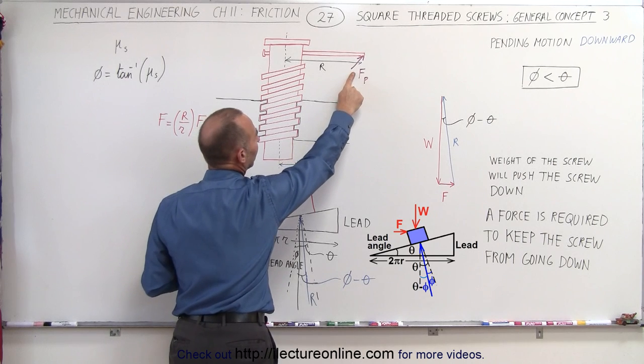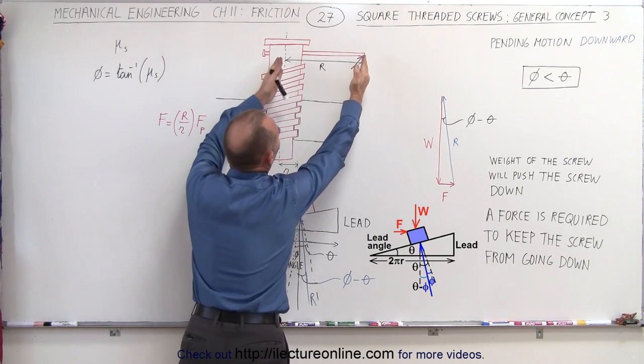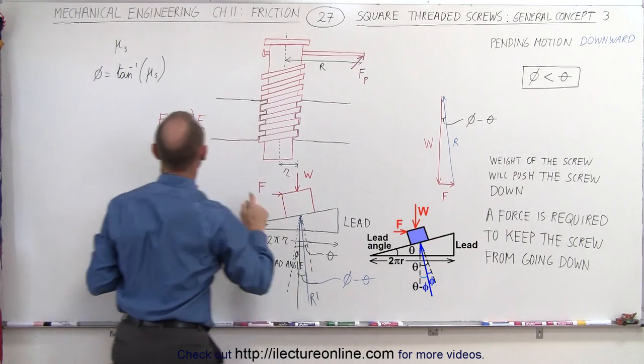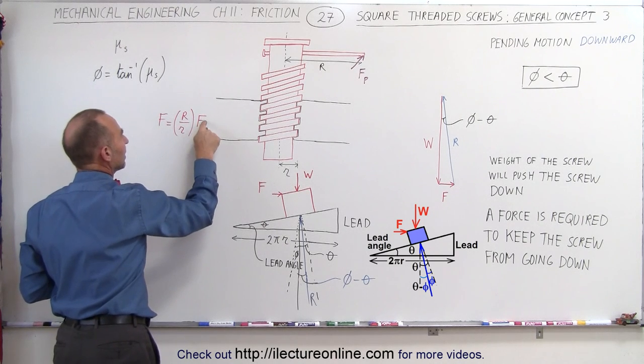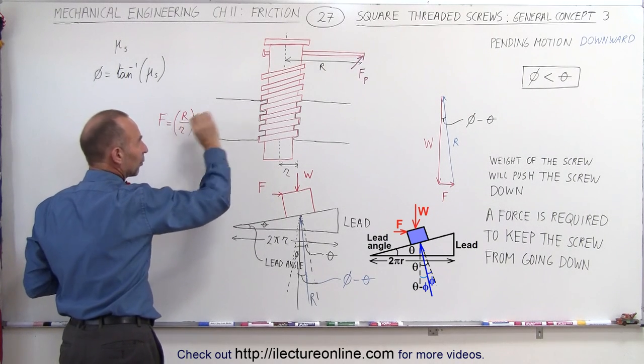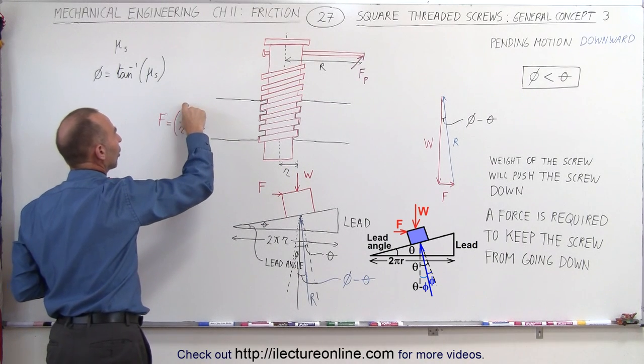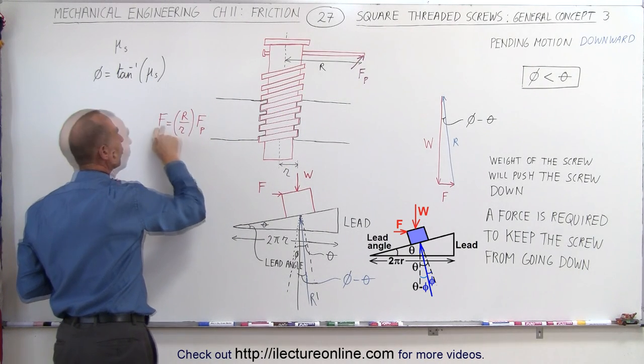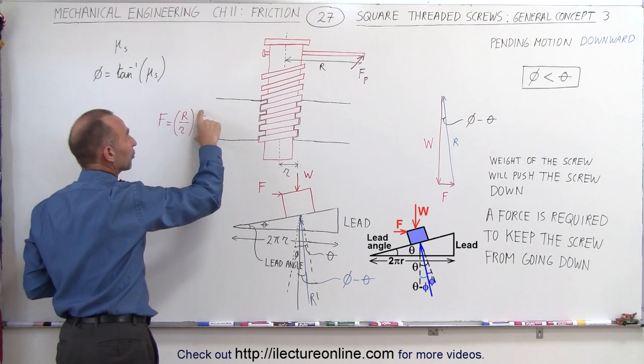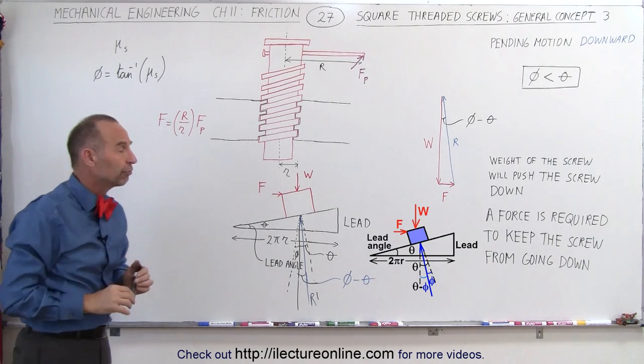Now the force that we apply here is force P, which acts through a moment arm R. The relationship between F and the force that we push physically against the handle right here. Notice that since R is much bigger than little r, this is very large compared to the force required to actually keep the screw from moving.